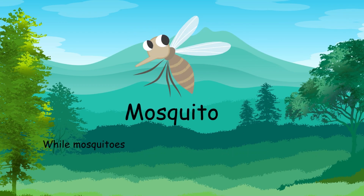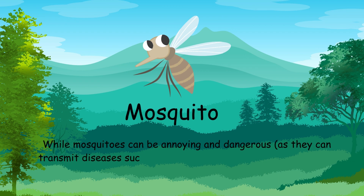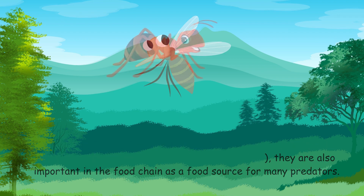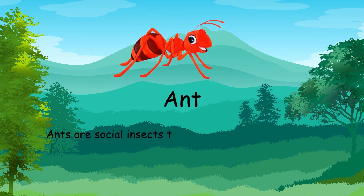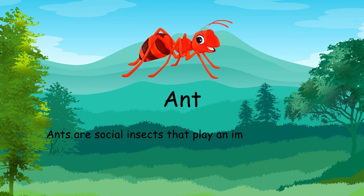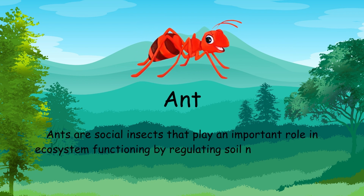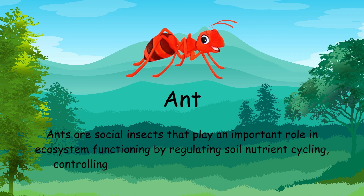While mosquitoes can be annoying and dangerous, they are also important in the food chain as a food source for many predators. Ants are social insects that play an important role in ecosystem functioning by regulating soil nutrient cycling.